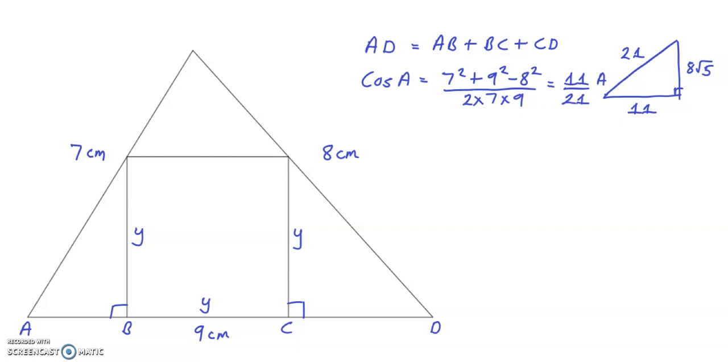And similarly, for the angle at D, cos D will equal 9 squared plus 8 squared minus 7 squared, all over 2 times 9 times 8 which equals 2 thirds.